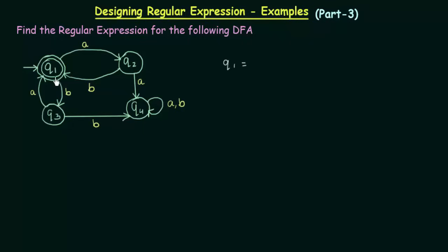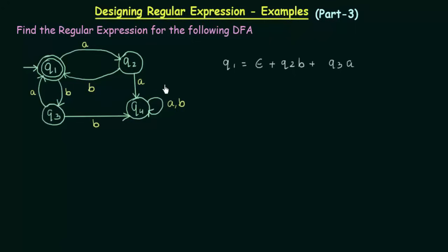First, check what are the incoming transitions to Q1. This is an incoming transition coming from nowhere, so this can be written as epsilon plus. From Q2 there is an incoming transition with input B, so we write Q2B plus. Then from Q3 there is also an incoming transition to Q1 with input A, so we write Q3A. This is equation number 1.